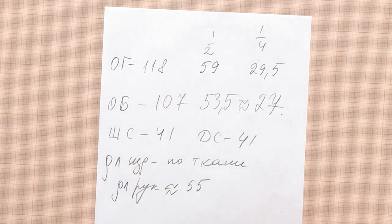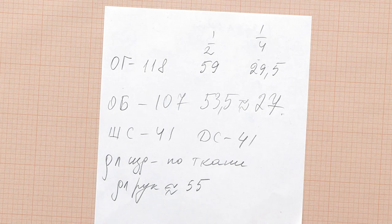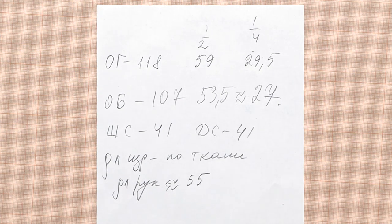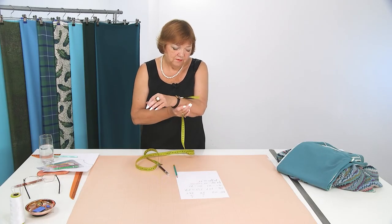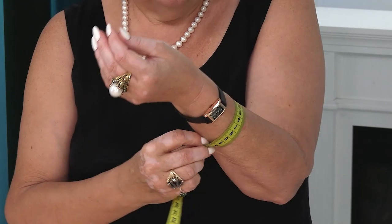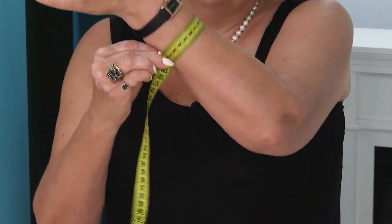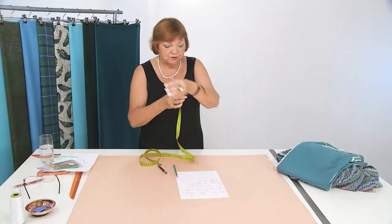Bust, hips, width and length of the back, length of the garment, and the sleeve length is 55 centimeters. We don't need a waist circumference. That's all we need. It's enough. Oh, and we need an arm circumference. It should be about 20 centimeters. I don't like wide sleeves. I write down 20 centimeters.